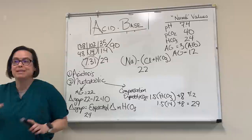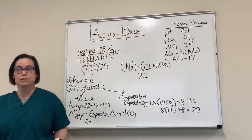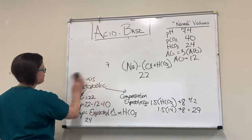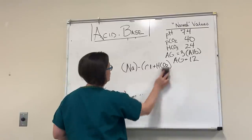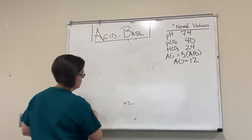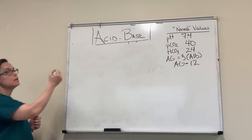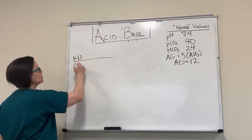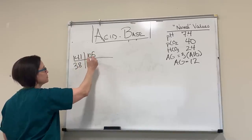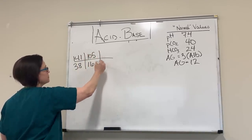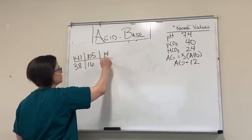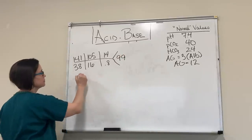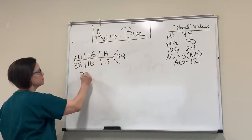They all happen the exact same way whether we have one disorder or three disorders. Let's do the next one. Numbers: sodium 141, potassium 3.8, chloride 105, bicarb 16, PCO2 14, creatinine 0.8, glucose 99, pH 7.31, PCO2 23.